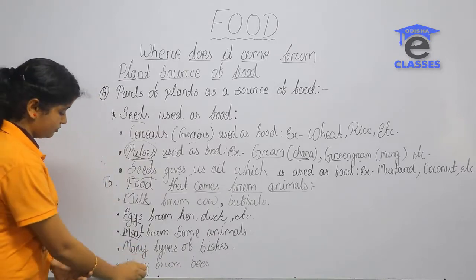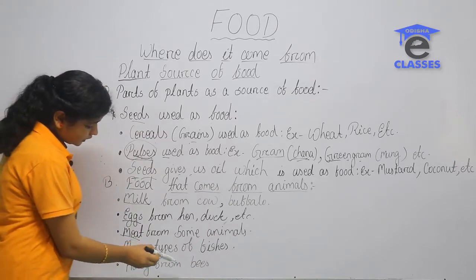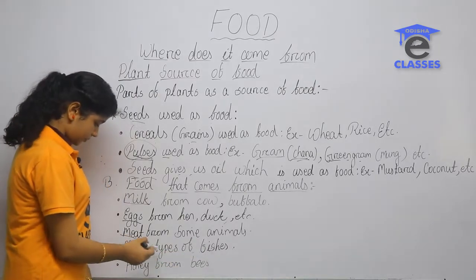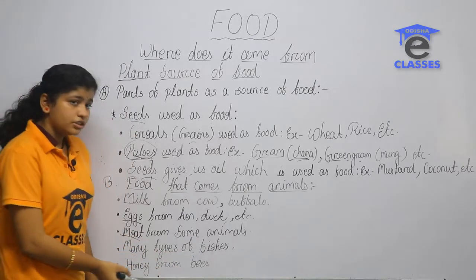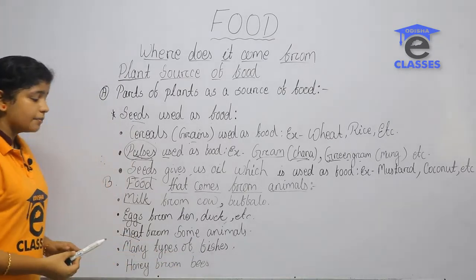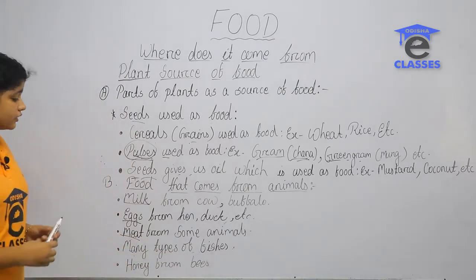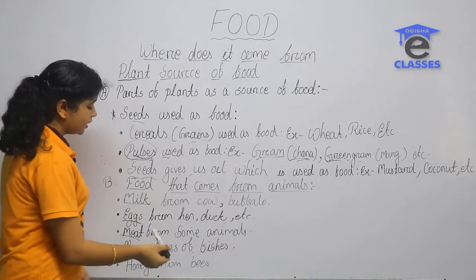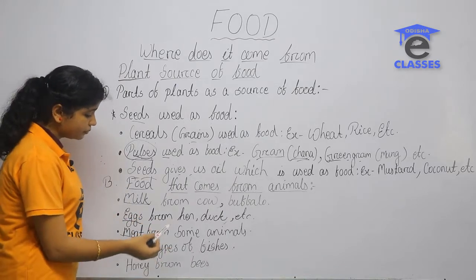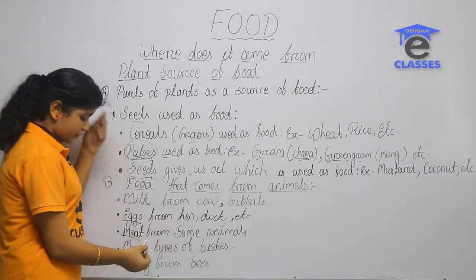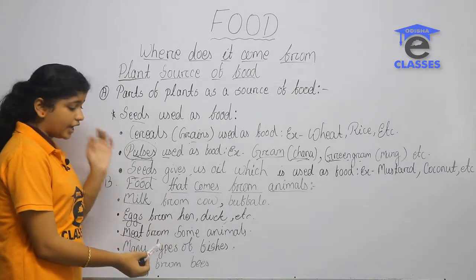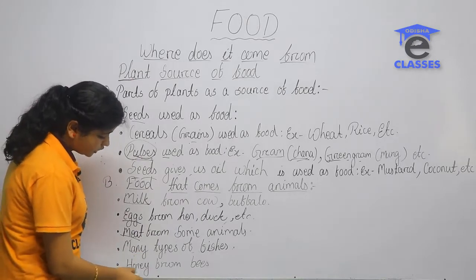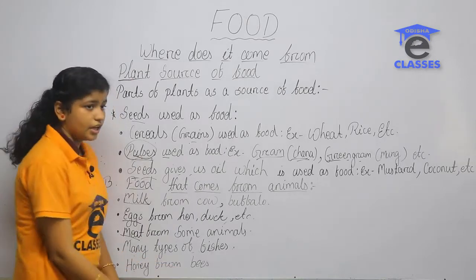We eat many types of fish. Examples include crab and prawns. We also get honey from bees.